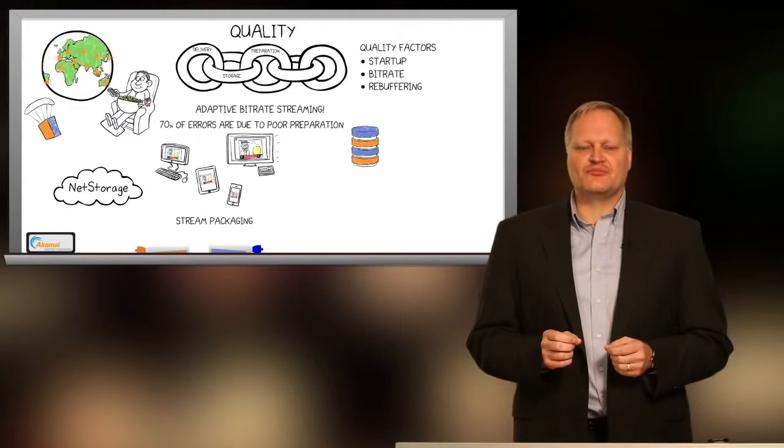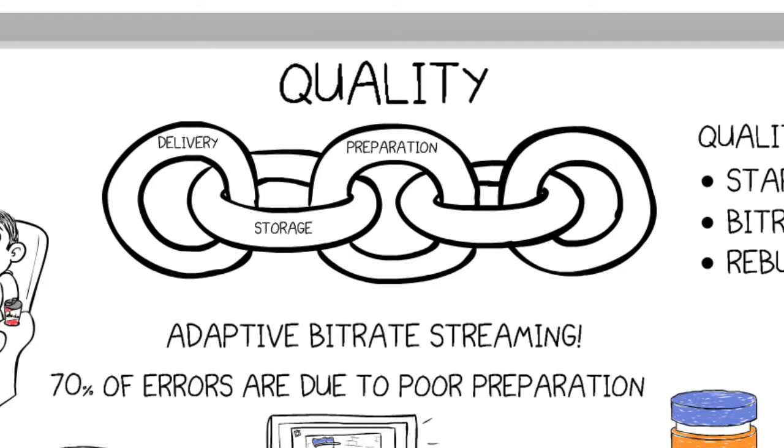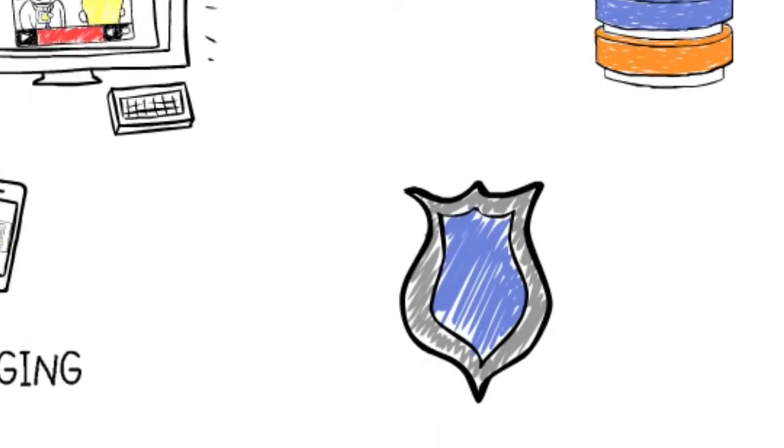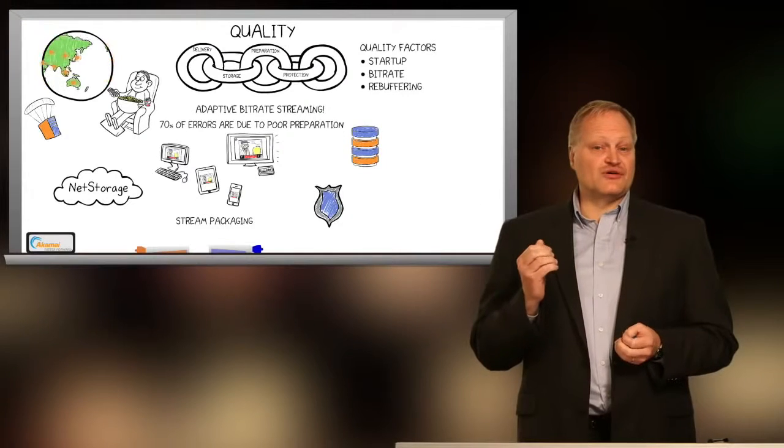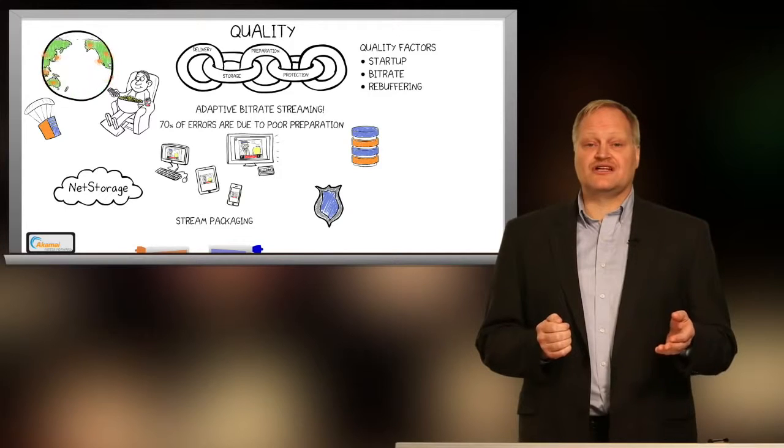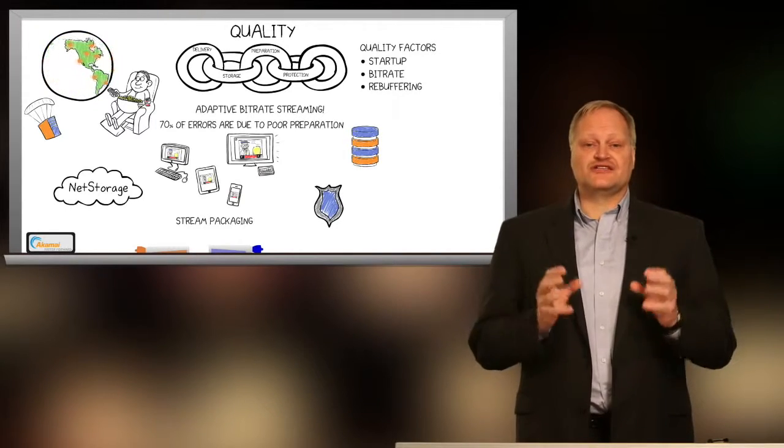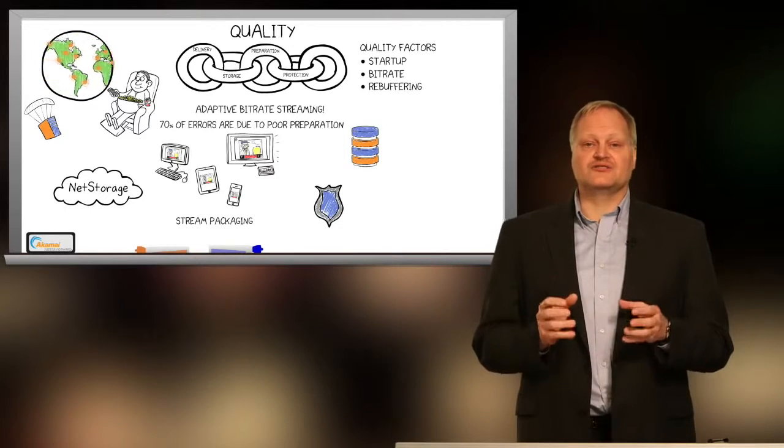Video publishers may also need to protect valuable content from unauthorized access without reducing quality. Akamai offers an array of protection mechanisms that can be leveraged as part of the delivery process, from geographically restricting content availability to encrypting the content dynamically. And our transcoding service offers integrated studio-grade digital rights management protection for ultimate simplicity.